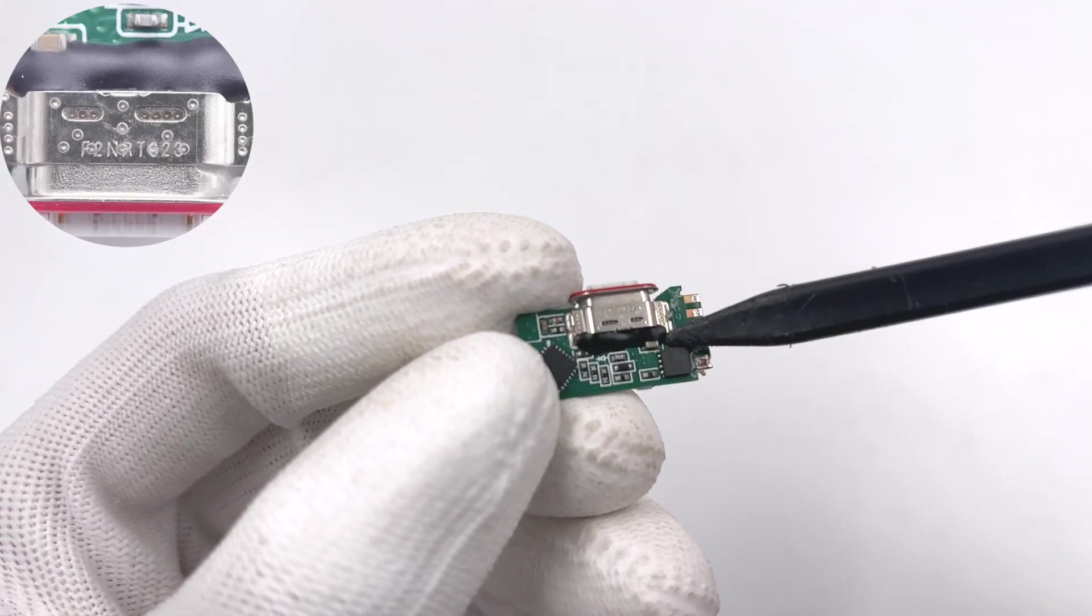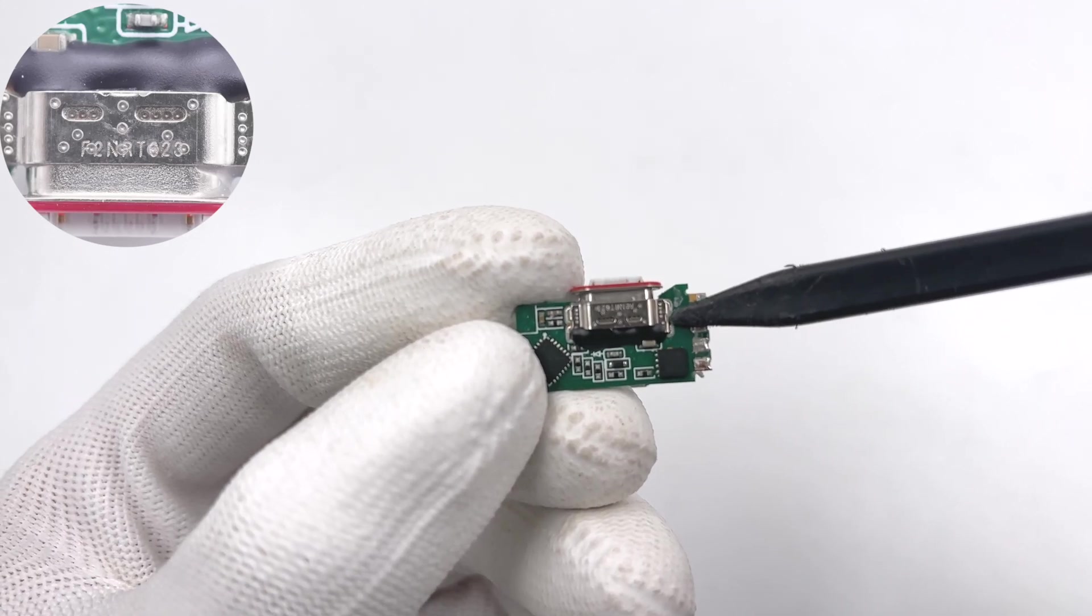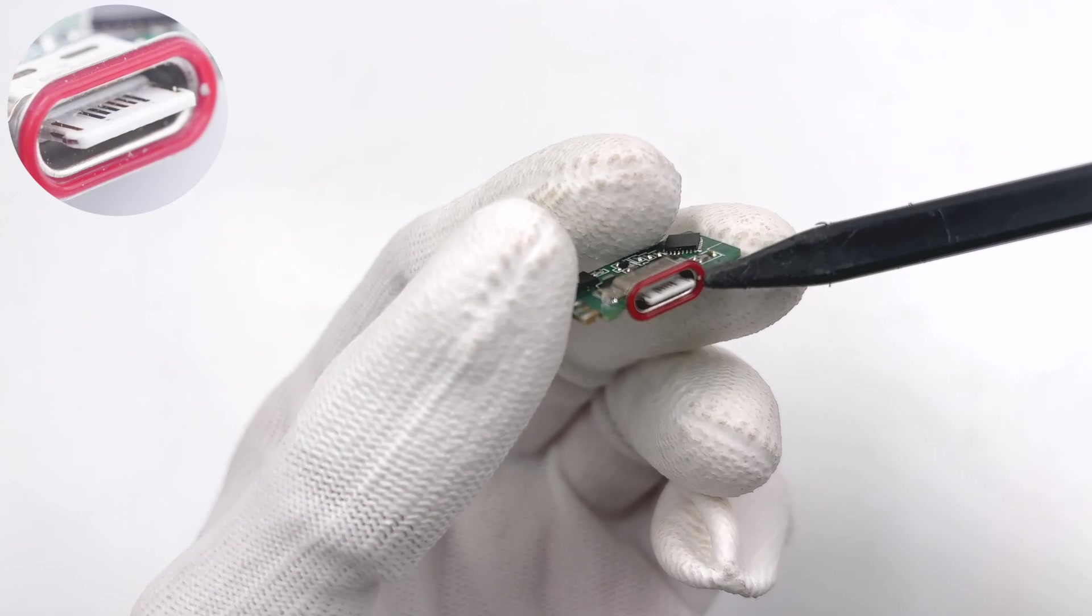Finally, the USB-C connector is protected by a metal sleeve. And the solder joints are sealed with glue. The front of the USB-C connector has a red rubber ring to keep it sealed.